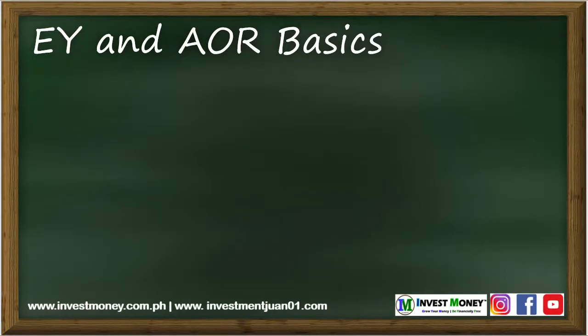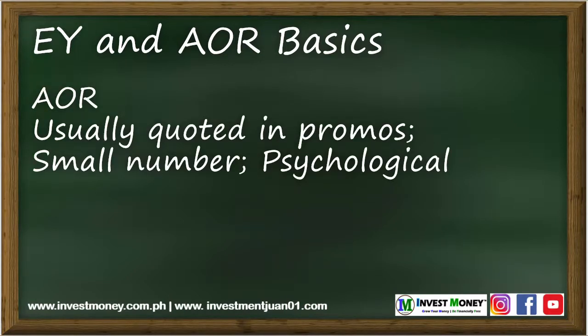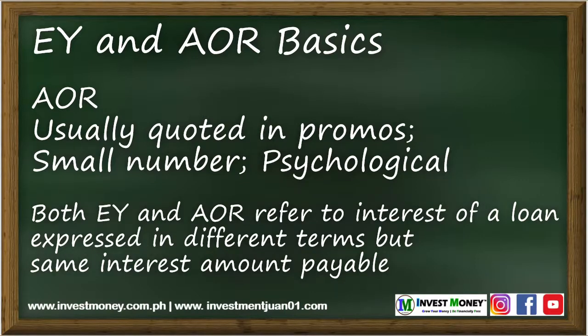EY and AOR are interchangeable when it comes to term loans and cash loans from credit cards. Telemarketers and promotional materials will usually publish AOR, as this is the smaller number, to entice customers psychologically to avail. Maybe the element of confusion and unfamiliarity, whether deliberate or not, also adds to the reasons why people get into loans unwittingly. Both AOR and EY refer to the interest charged to a loan, just expressed in different terms. This will result in the same interest amount to be paid after some conversion, which I will show you later.